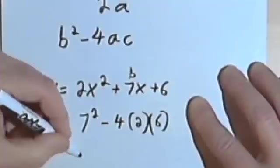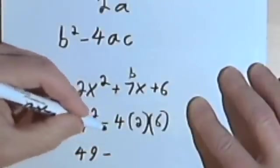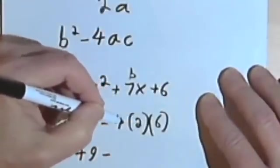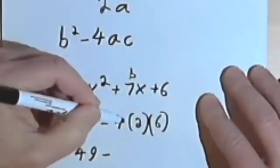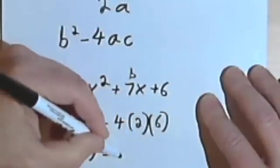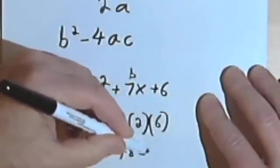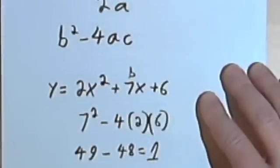And I'd figure out what this is. I'd have 49 minus... let's see, 4 times 2 is 8, and 8 times 6 is 48, so this whole thing would equal 1.